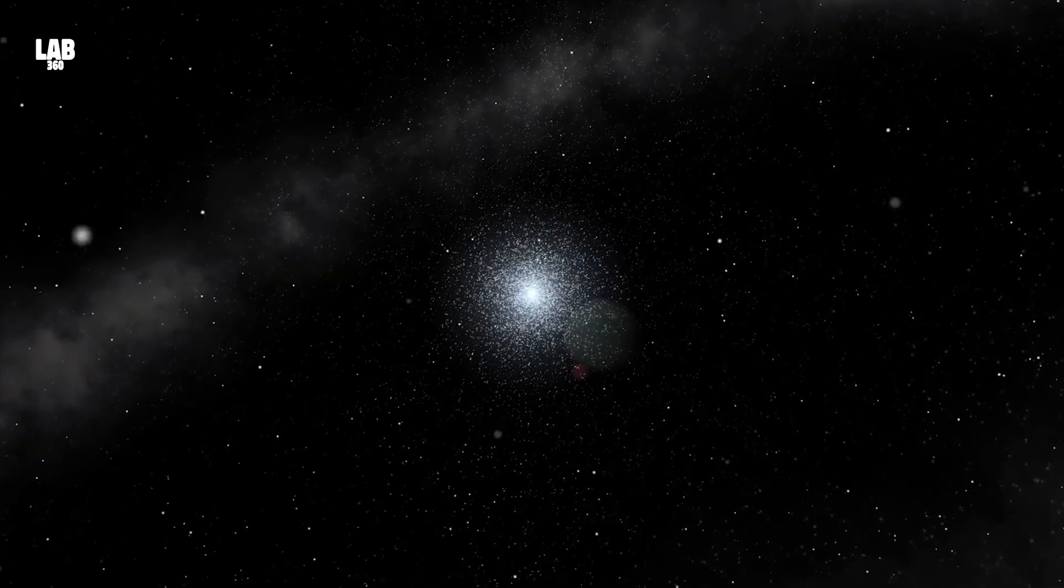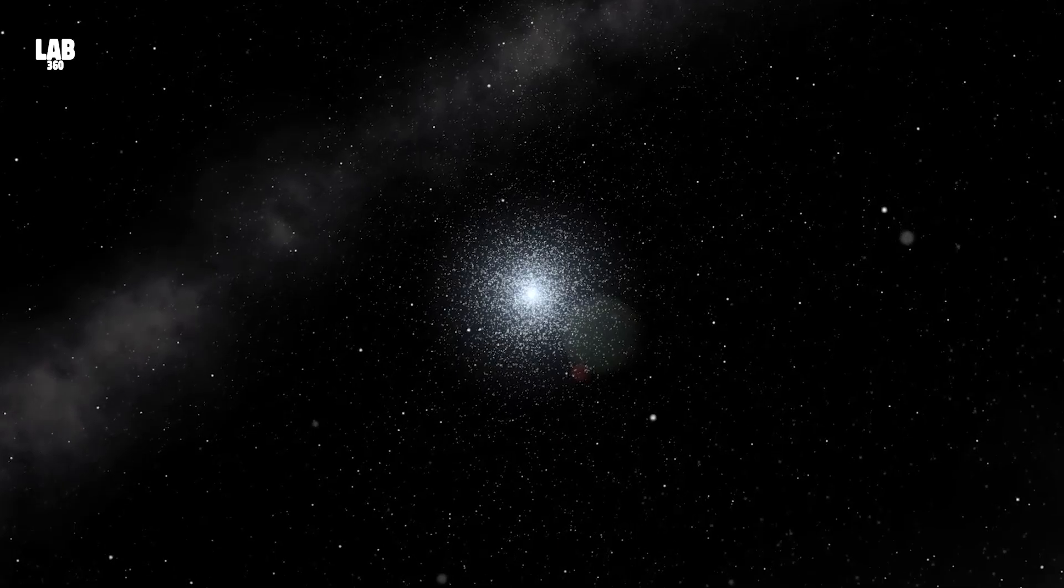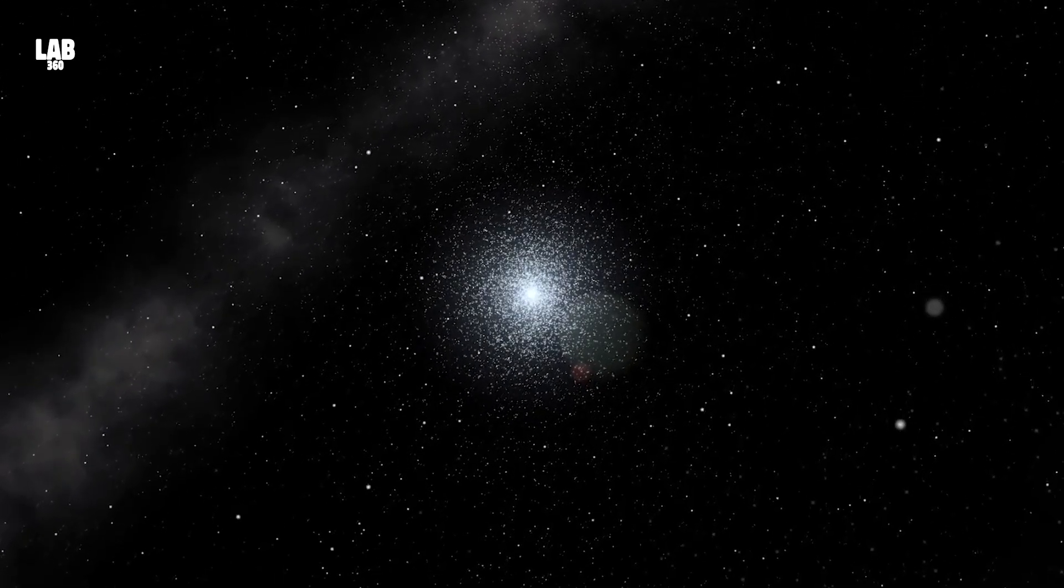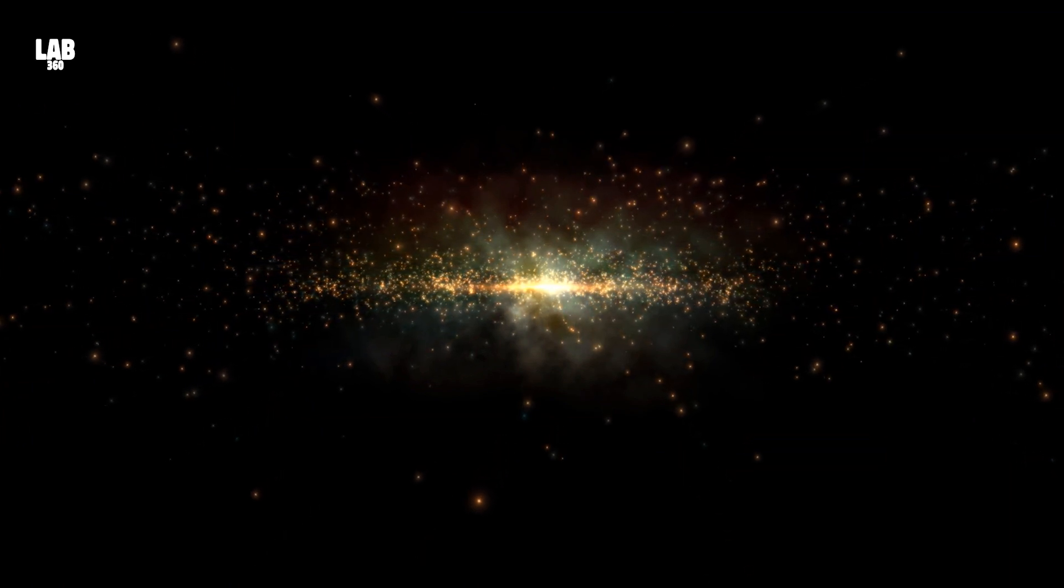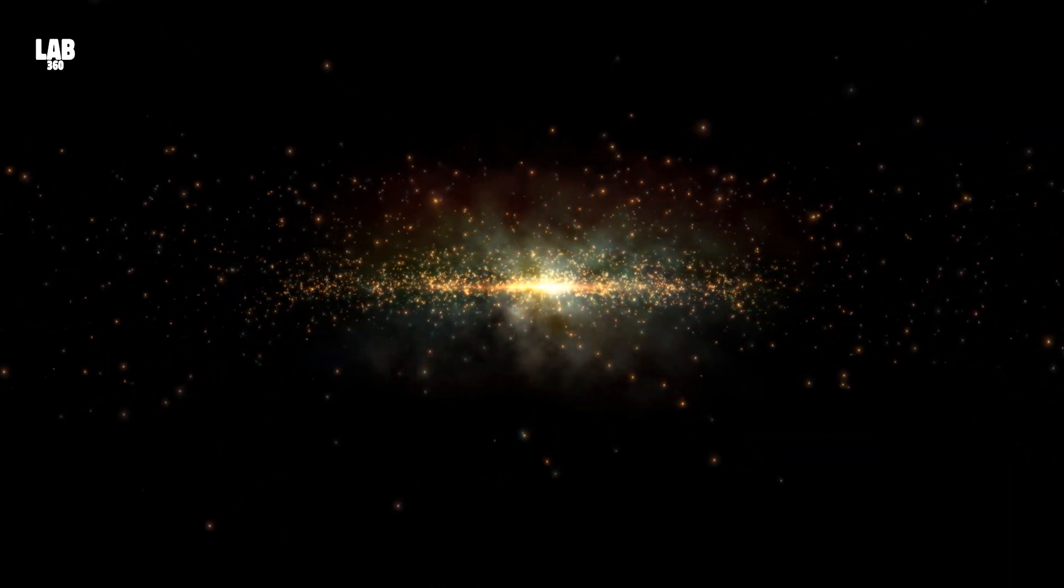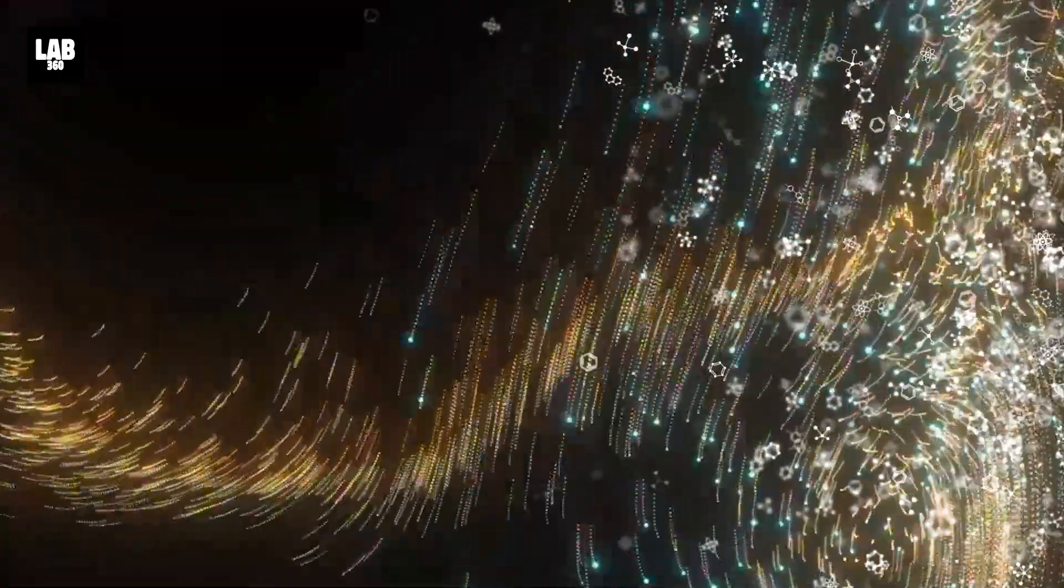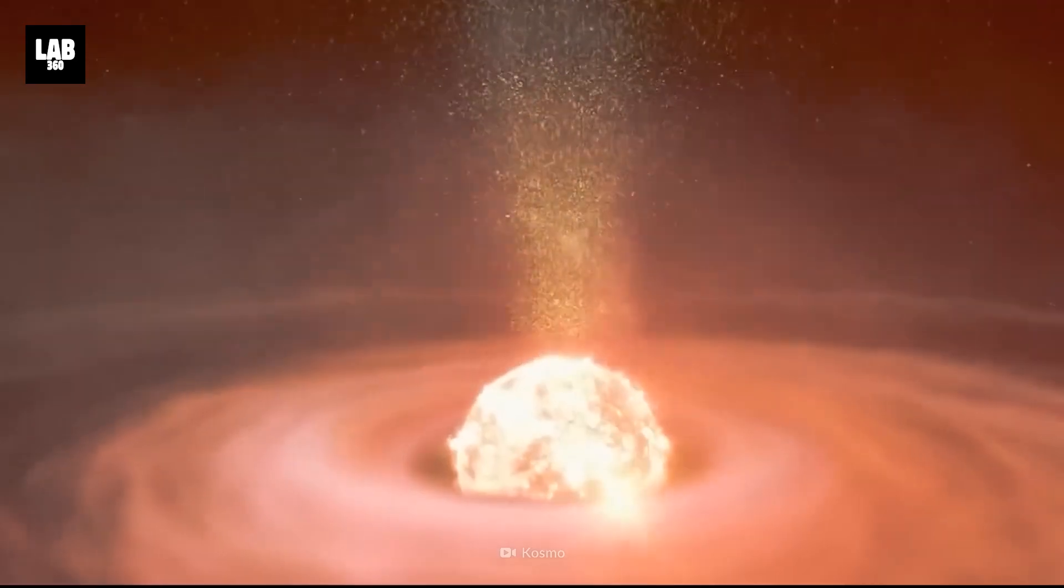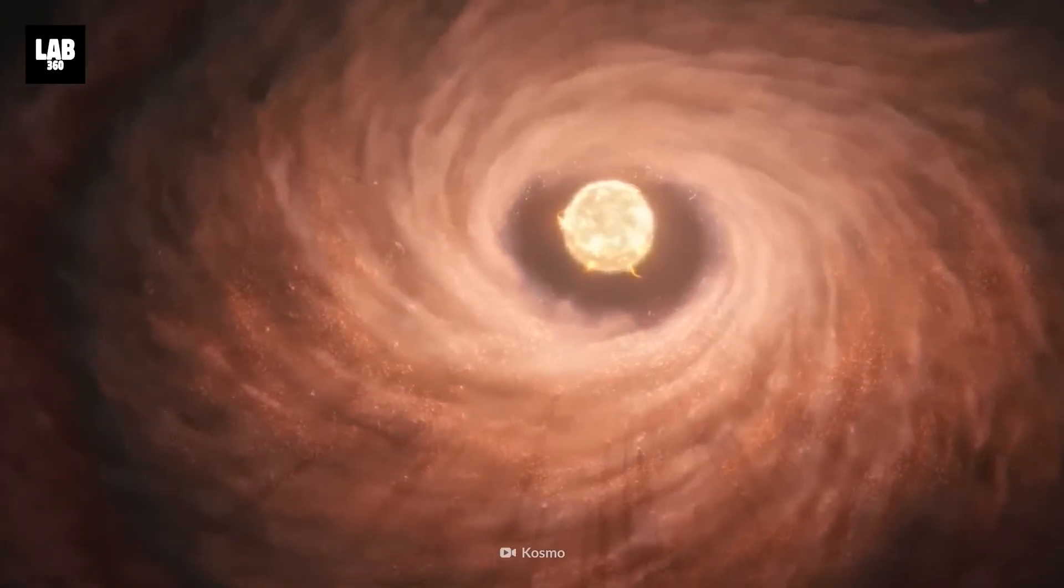The star clusters in question are called globular clusters, ancient celestial enclaves born approximately 13.4 billion years ago. They are not only the most massive and ancient of star groupings, but they also possess a peculiar characteristic, compositional variation among their stars. Picture this: stars born together, side by side, emerging from the same cosmic womb of collapsing gas and dust.